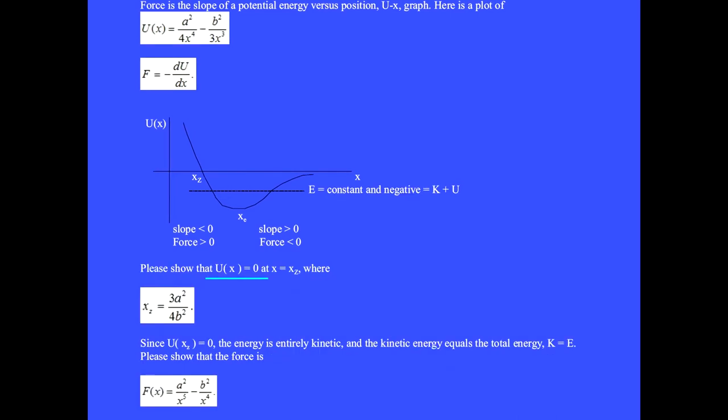Please show that U(x) equals zero at x equals xz where xz equals 3a squared over 4b squared. Since U at xz equals zero, the energy is entirely kinetic and the kinetic energy equals the total energy K equals E. Please show that the force is F(x) equals a squared over x to the fifth minus b squared over x to the fourth.